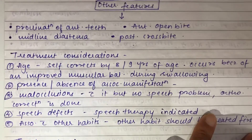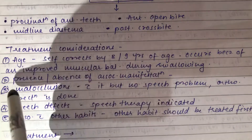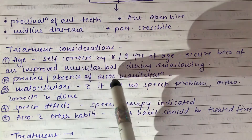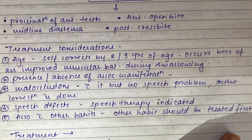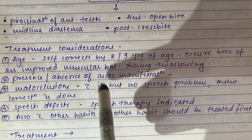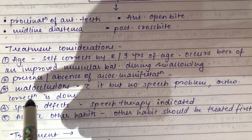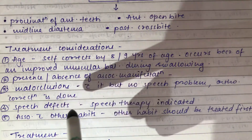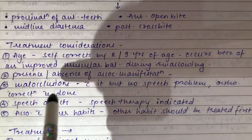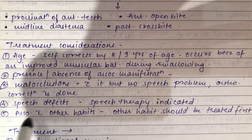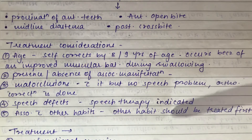For treatment, age is an important consideration: the condition often self-corrects by eight to nine years due to improved muscular balance during swallowing. If malocclusion is present without speech problems, orthodontic correction is done. If speech defects are present, speech therapy is indicated. If tongue thrusting is associated with other oral habits like thumb sucking, those habits should be treated first.